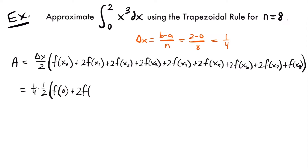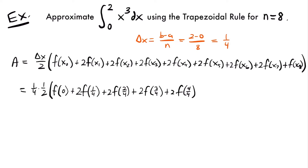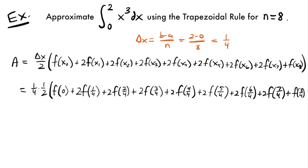Adding 1 fourth to 0, x sub 1 is 1 fourth. Then x sub 2 is 2 fourths — we add another fourth to the previous 1 fourth. x sub 3 is 3 fourths. For x sub 4 we have f of 4 fourths. Then plus 2 times f of x sub 5, which is 5 fourths, then plus 2 times f of x sub 6, which is 6 fourths. Then plus 2 times f of 7 fourths, and plus f of 8 fourths.